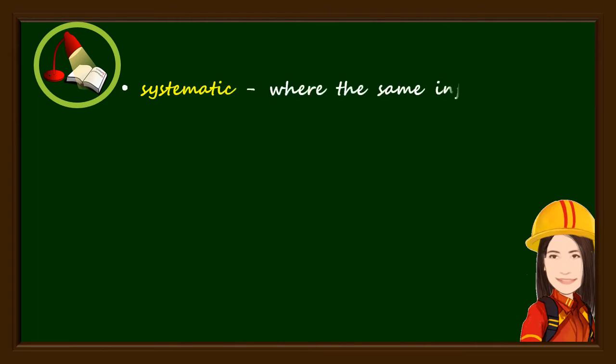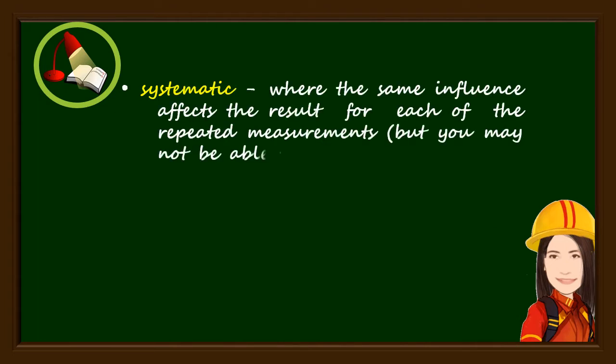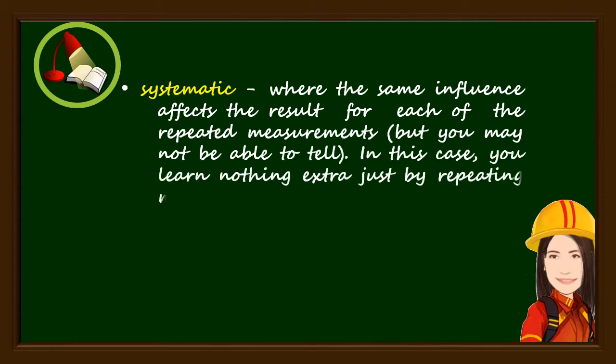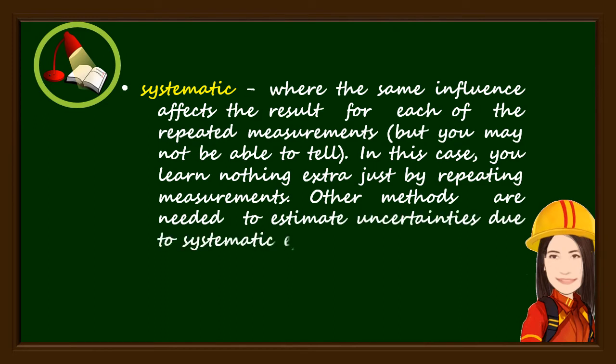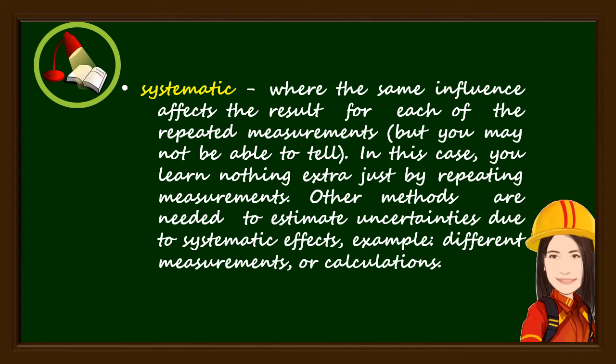Systematic, where the same influence affects the result for each of the repeated measurements, but you may not be able to tell. In this case, you learn nothing extra just by repeating measurements. Other methods are needed to estimate uncertainties due to systematic effects, for example, different measurements or calculations.